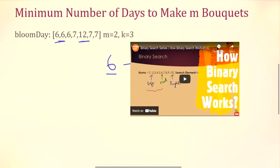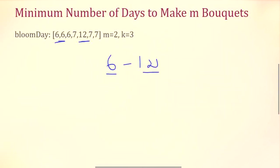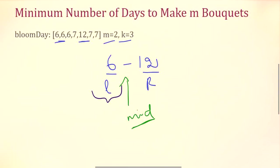We are going to use the same template as in all our previous videos. If you are not familiar with the template, you can check my first video on how binary search works. We define our condition function, and here the condition function determines whether we can make m bouquets with k adjacent flowers within the number of days calculated as the mid value. We set the lower bound as 6 and the upper bound as 12 — the maximum value in the array — and calculate a mid value each time. Based on the mid value and the condition function's result, we fix our search space from left to mid or from mid to right.